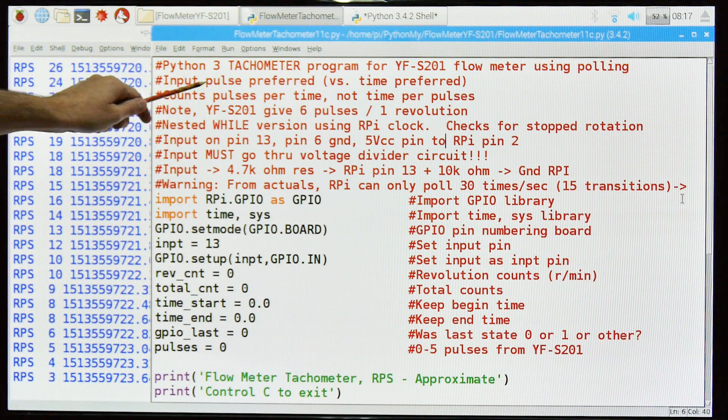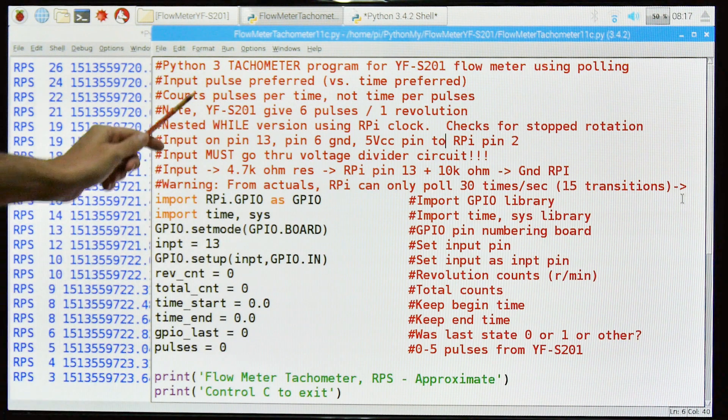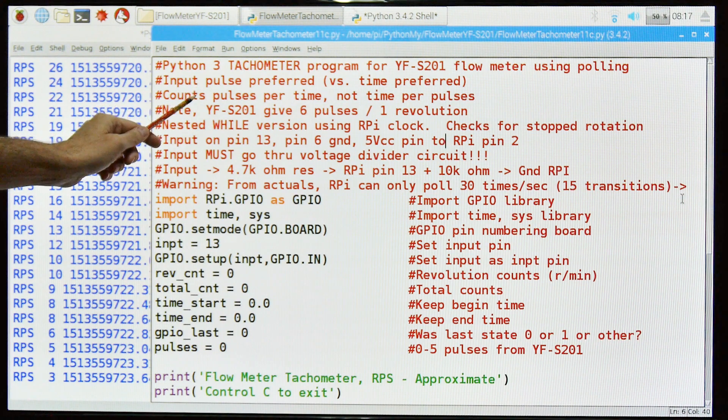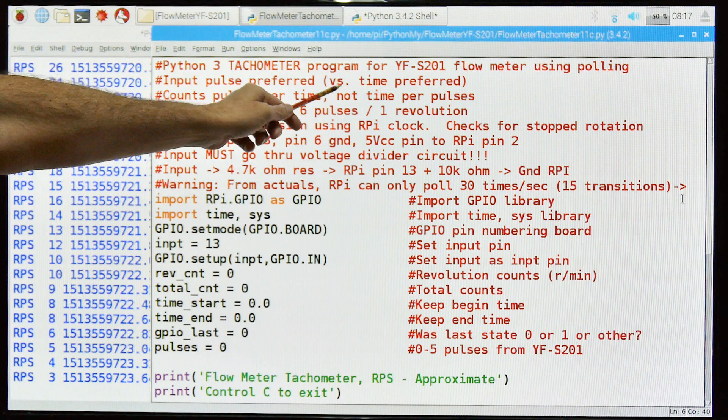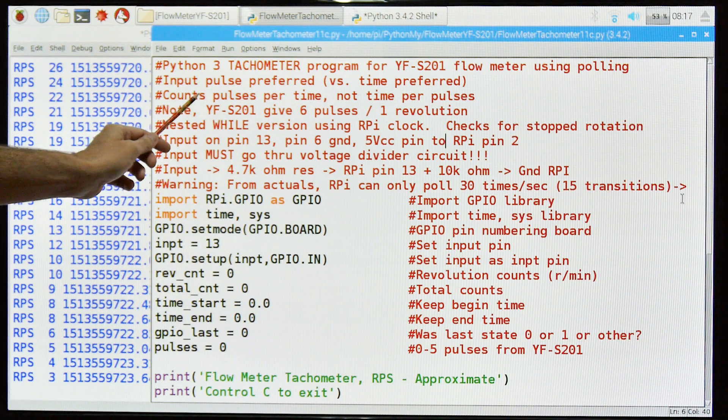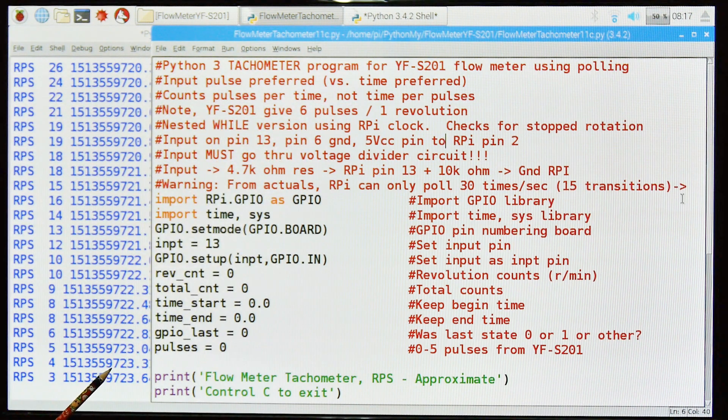This uses a pulse preferred system as opposed to time preferred. What I mean by that is it activates when I get a pulse back from the meter. So if the meter is stopped, nothing will happen, you won't get any more readings. Whereas if I had a time preferred one, say every five seconds it would give me a reading, I would get a reading of zero.